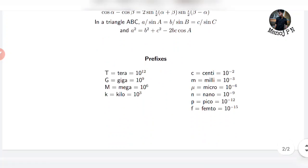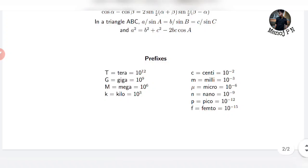Next, SI prefixes: tera is 10¹², giga is 10⁹, mega is 10⁶, kilo is 10³, centi is 10⁻², milli is 10⁻³, micro is 10⁻⁶, nano is 10⁻⁹, pico is 10⁻¹², femto is 10⁻¹⁵. These are very important for Physics.